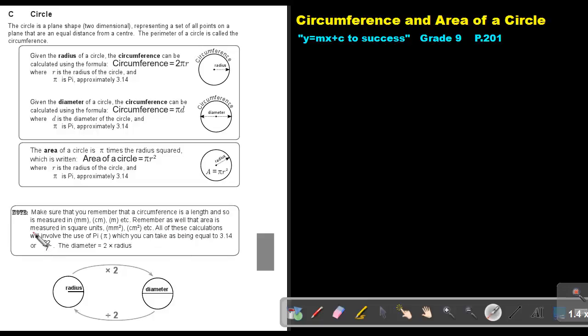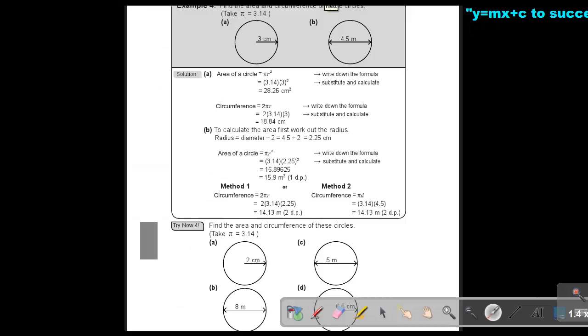All of these calculations will involve the use of π, which can take as being equal to 3.14 or 22 over 7. The diameter is 2 multiplied by the radius. So if I have the radius, I can multiply by 2 to get the diameter. And if I have the diameter, I can divide by 2 to get the radius.